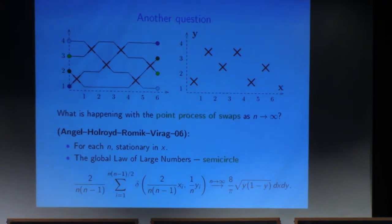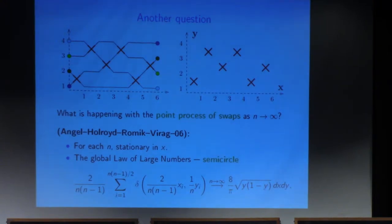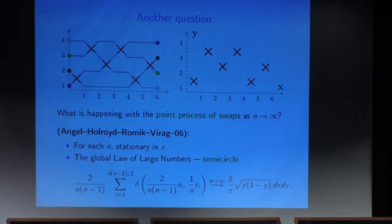This looks very similar to the Wigner semicircle law from random matrix theory. Conceptually, though, I treat it more as a coincidence, because the source of this semicircle here is very different from how it appears in random matrices. In the next result, random matrices will appear more conceptually — not just as a coincidence.